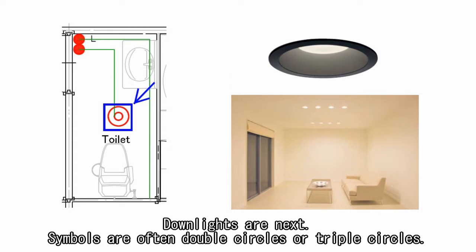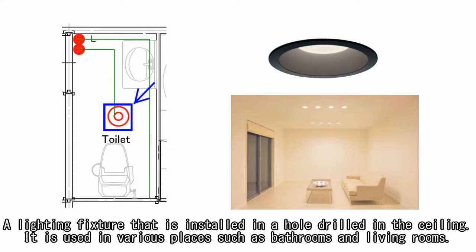Down lights are next. Symbols are often double circles or triple circles. A lighting fixture that is installed in a hole drilled in the ceiling. It is used in various places such as bathrooms and living rooms.